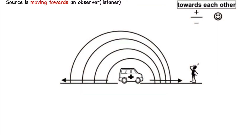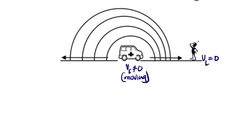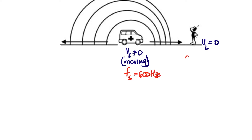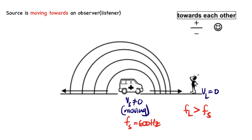Now I'll show you the simulation. When a source is moving towards the listener, the velocity of the source is not equal to zero. Let's say the listener's velocity is zero. The source — the ambulance — emits a sound wave with a frequency of 600 Hz. It's very important to understand: the frequency perceived by the listener will always be greater than the frequency of the source when they move towards each other, so it will be above 600 Hz, maybe 640 or 610.